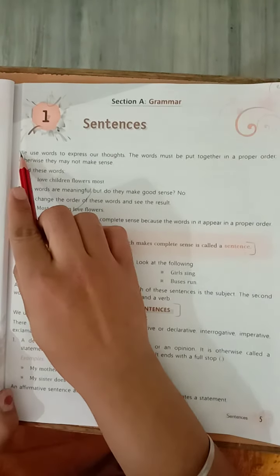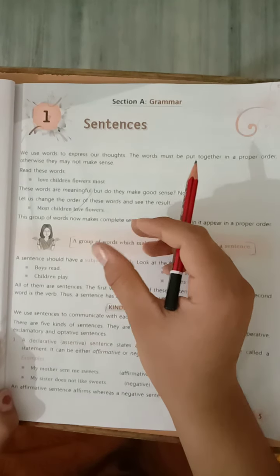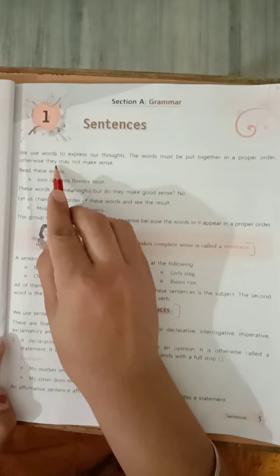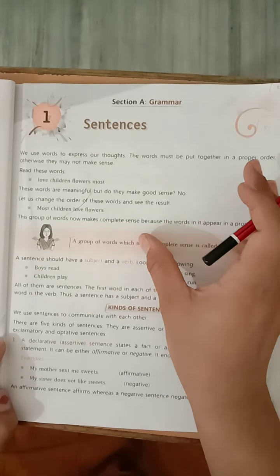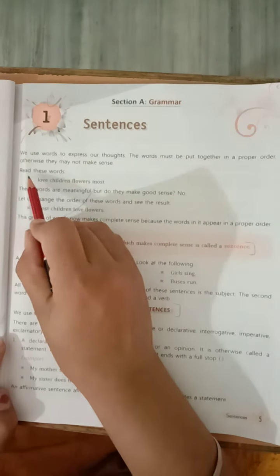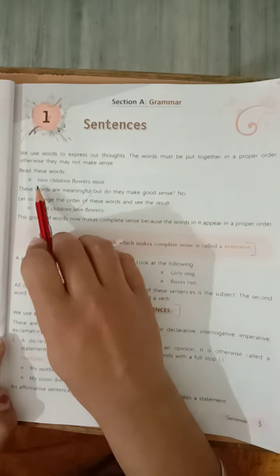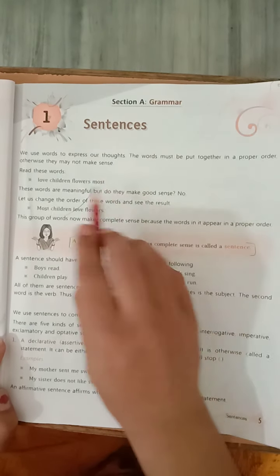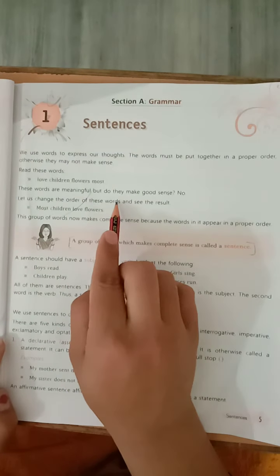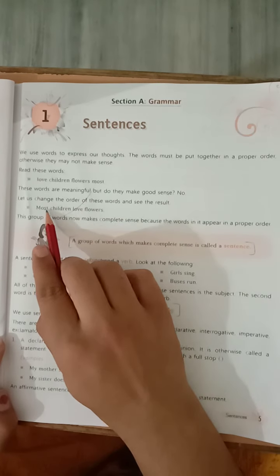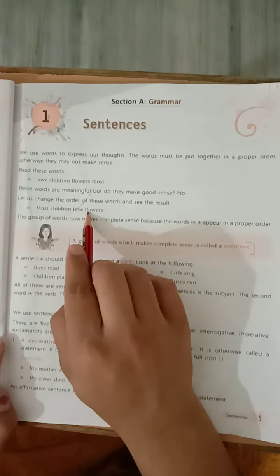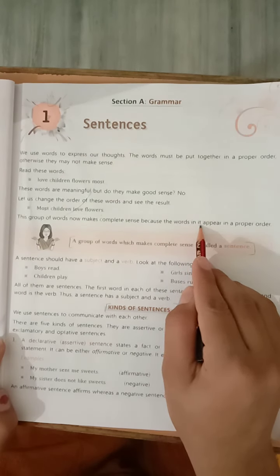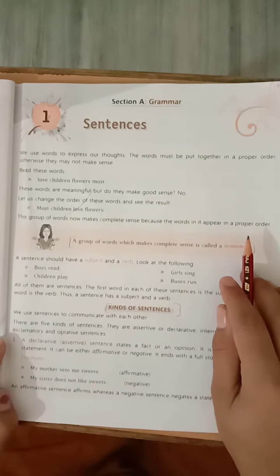Now we are going to start this chapter. We use words to express our thoughts. Hum log kya karte hain? Words use karte hain humare thoughts ko express karne ke liye, hamare vichar ko vyakt karne ke liye. The words must be put together in a proper order, otherwise they may not make sense. Agar words ko proper order mein nahi likha jaye, toh woh ek complete sense ya proper sense nahi banate hain. Read these words: love, children, flower must. Ye complete sentence nahi, kyunki iska koi bhi sense nahi nikal raha. These words are meaningful, but do they make good sense? No, iska koi sense nahi nikal raha hai. Let us change the order of these words and see the result. Most children love flowers. Ab iska matlab, bhoat sare bachon ko flowers pasand hote hain, okay? This group of words now makes complete sense because the words in it appear in a proper order. Kyunki inko proper order mein ham ne arrange kiya hai, okay?